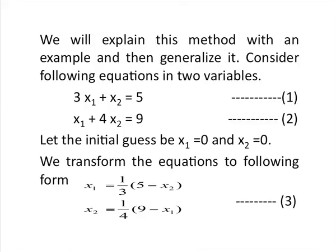On your screen, see equations 1 and 2. These two equations form the system of linear equations. Suppose the initial guess is x1 = 0 and x2 = 0. We use equation 1 to find the value of x1 — that means we transfer x2 to the right-hand side and divide by the coefficient of x1, which is 3. You can see in equation 3 on your screen, we will have the value of x1 in terms of the coefficients and the variable x2.